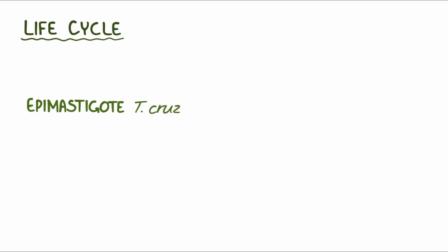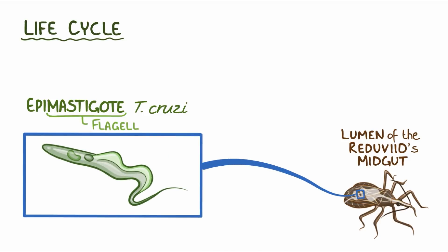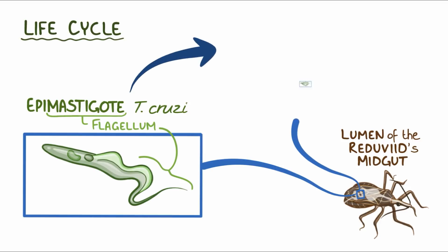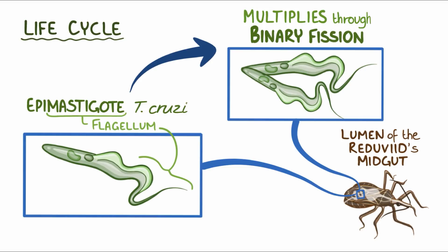The life cycle of T. cruzi starts with the epimastigote T. cruzi, which sits in the lumen of the reduviid bug's midgut. Mastigote refers to the whip-like structure called a flagellum, which protrudes from the center of the T. cruzi and helps it move around. While in the midgut, the epimastigote multiplies through binary fission.